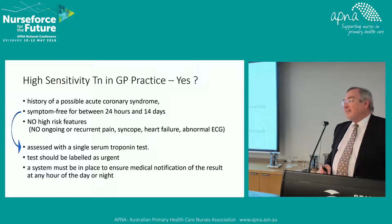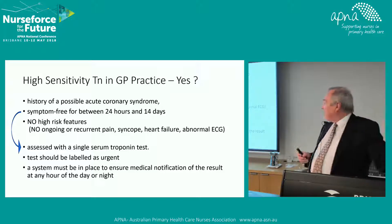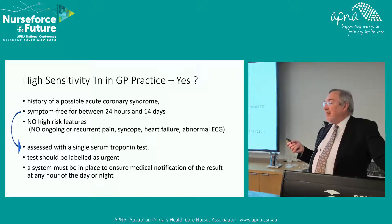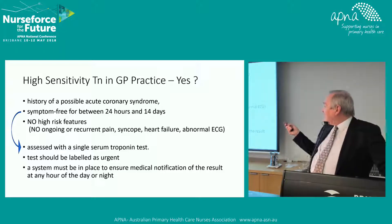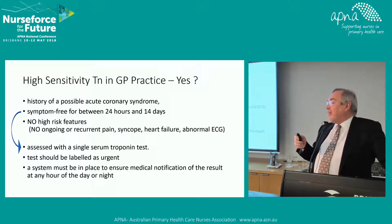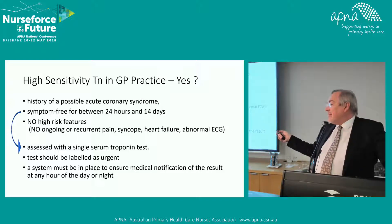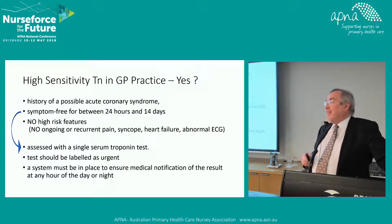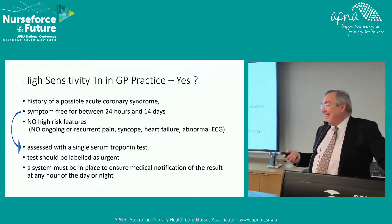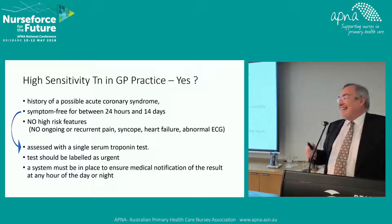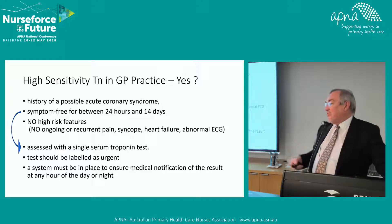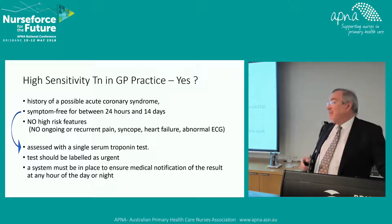Some guidelines say if you order a troponin you should have the patient under observation with resuscitation equipment available — those tend to be guidelines where the troponin is being ordered within 24 hours, so it's a riskier patient. The argument with this particular guideline is that it's a lower-risk patient, so it's reasonable for them to be in a safe environment waiting for notification. Or if you're worried, put them in a side room, or if that's not suitable, they should go to the hospital.